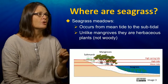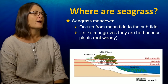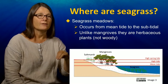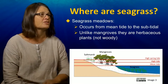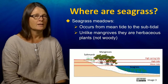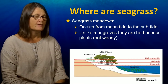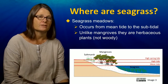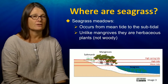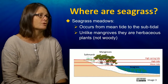Where do seagrasses live? They occur basically below the mangroves in tropical habitats, from about the mean tide level — where the water is present about half of the time — to the sub-tidal, where they're submerged all the time. Unlike mangroves, which are woody angiosperms, seagrasses are herbaceous. That's what makes them easy to digest by the large grazers in seagrass beds: dugongs, manatees, and turtles.